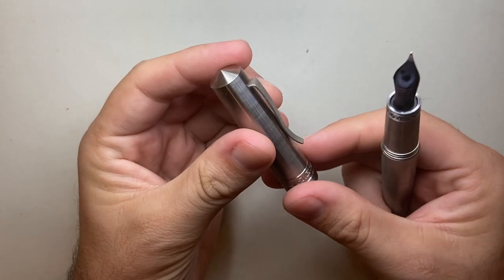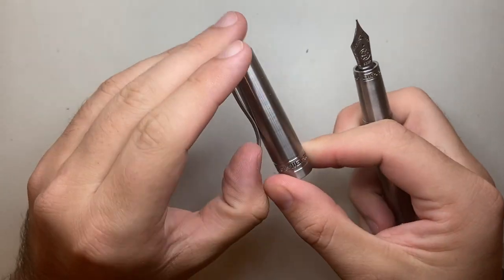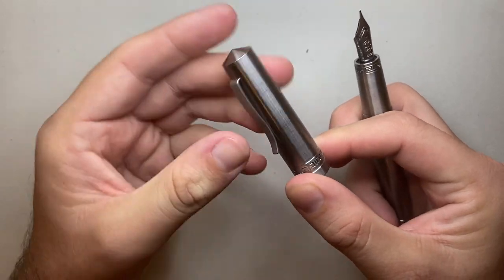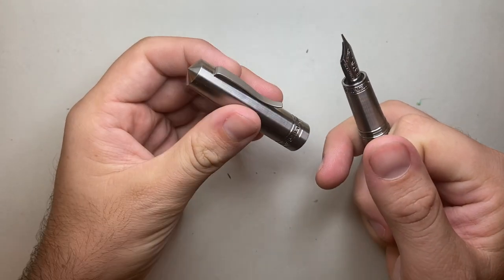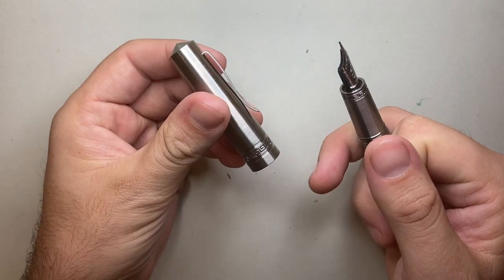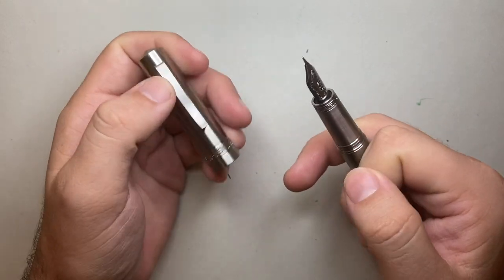The clip is cut into the cap and it's quite rigid. It's going to hold your pen on a pen case or shirt, but you will need something of reasonable strength to actually get it over that.